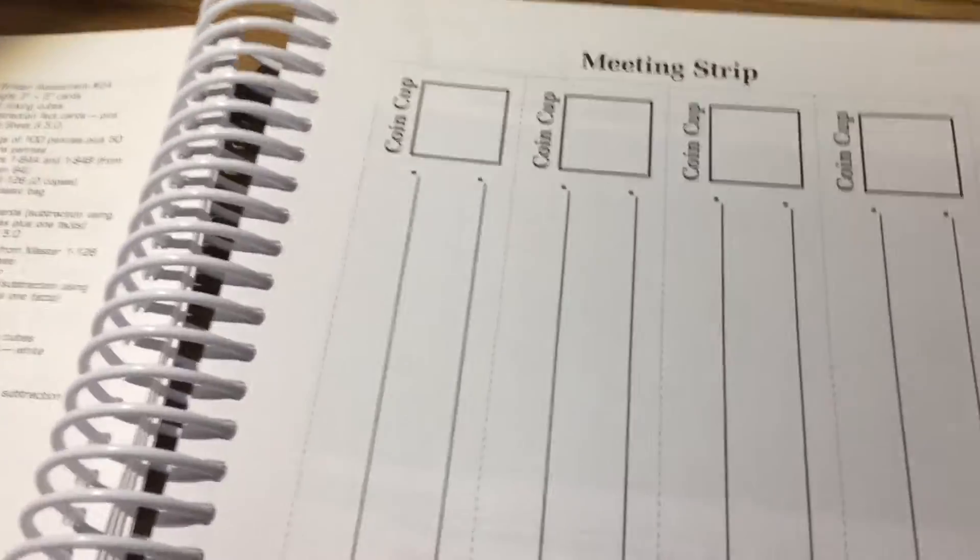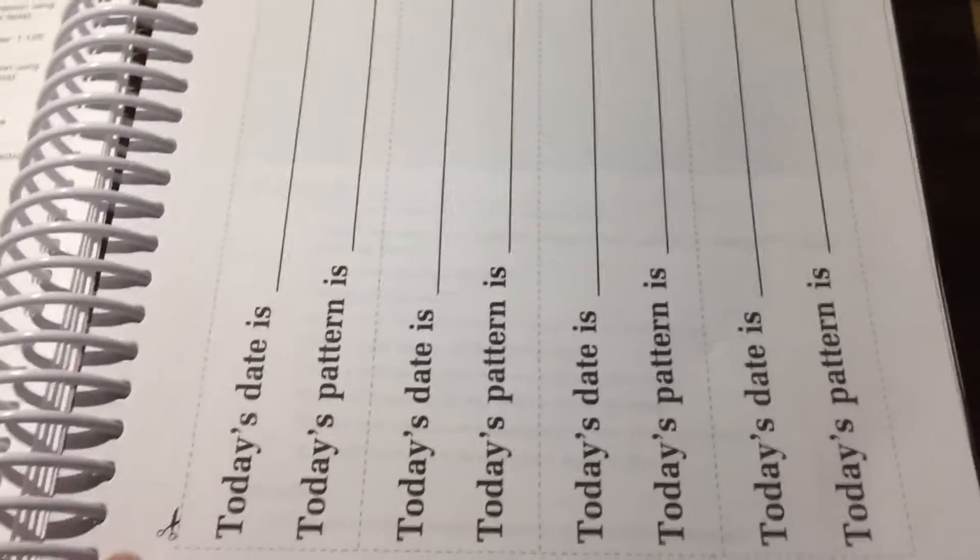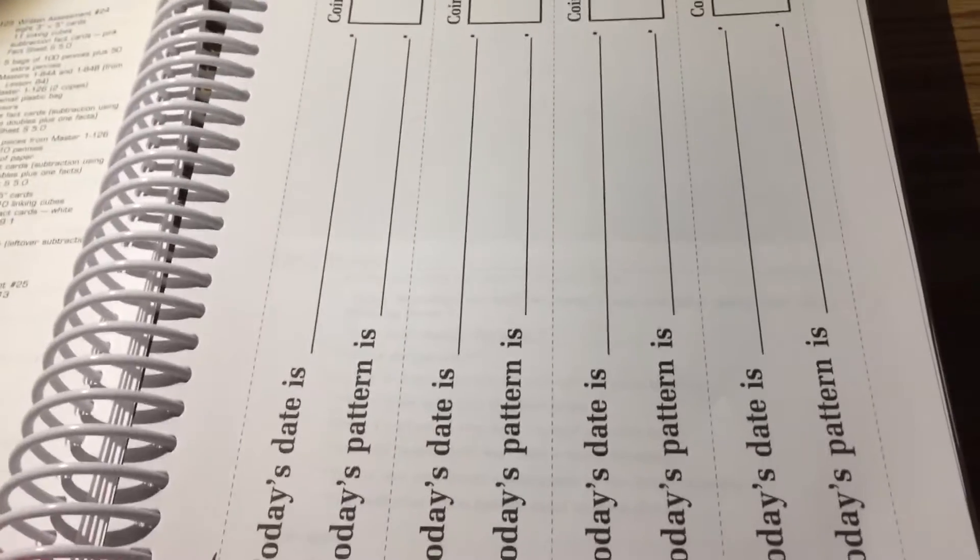So it goes through all the lessons and there's a list of what you need. Oh okay so here's the meeting strip. Sorry I thought they were in the meeting book but they're actually in here. These are the meeting strips that the lesson requires. The first lesson.